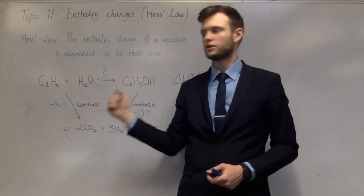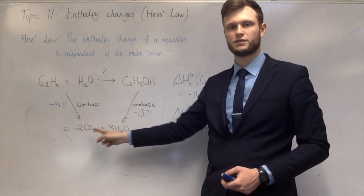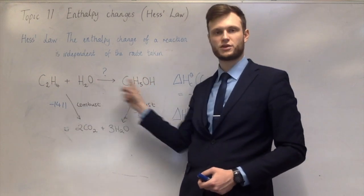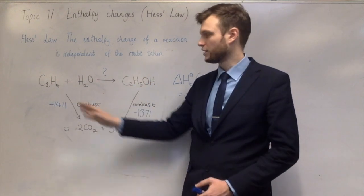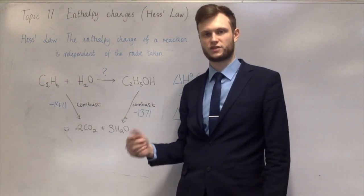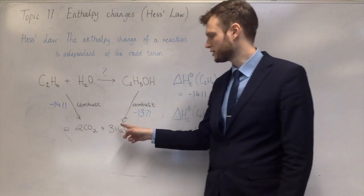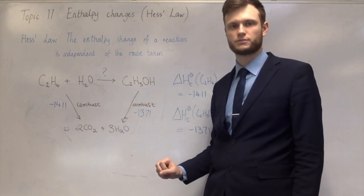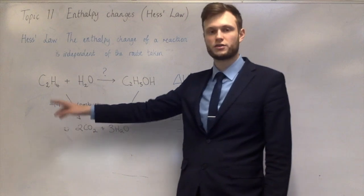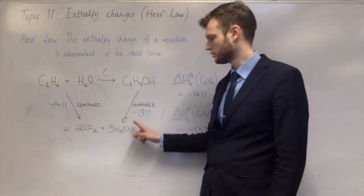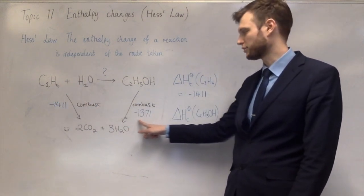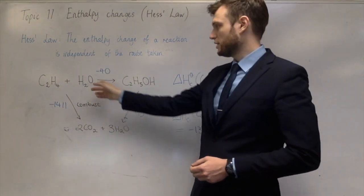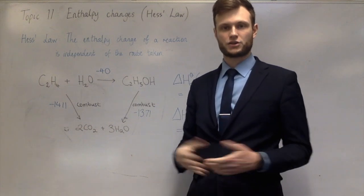The trick is: if you go with the arrow, the enthalpy change stays the same; if you go in the opposite direction of the arrow, you get the opposite enthalpy change. So in this case, minus 1411 plus 1371 gives the answer of minus 40 kJ/mol, and minus 40 is the enthalpy change of the hydration of ethene to make ethanol.